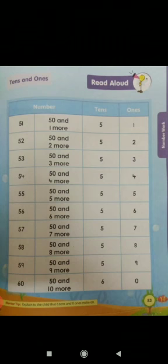Tens and ones from page number 53. Can you see the first sum? 51. So what's written under numbers? 50 and 1 more. In tens, what we have written? 5. In ones, what we have written? 1. Can you see? We have splitted.